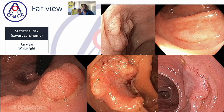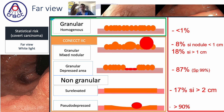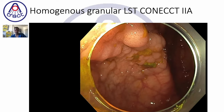Using white light far view of the whole lesion, you can assess the T1 cancer risk: under 1% in granular homogeneous LSTs; 8% with a nodule different from the lesion under 1 cm, and 18% if over 1 cm; 87% if there is a depressed demarcated area in a granular LST; 27% for a sur-elevated non-granular LST; 47% for a pseudo-depressed non-granular LST; and 89% if there is a nodule in the pseudo-depressed area.